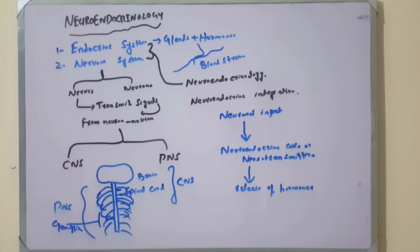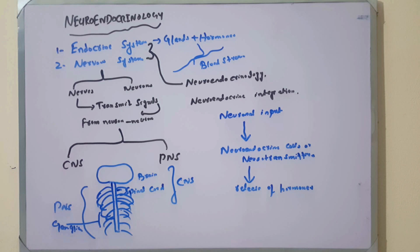Neuroendocrinology describes the way in which the hypothalamus controls the secretion of the posterior pituitary, and how the hypothalamus maintains homeostasis by the help of the neuroendocrine system.